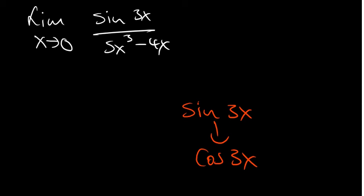Now you have to multiply by the derivative of whatever is attached to a function. So the derivative of 3x is 3. So that's the answer for the top part. So therefore, this is equal to the limit as x approaches 0. For the top part you have 3 cos 3x.